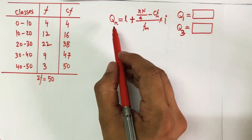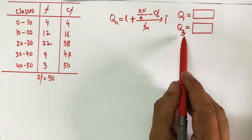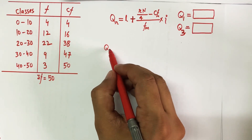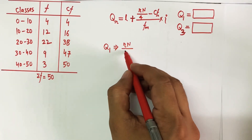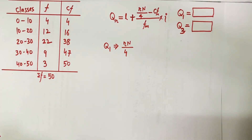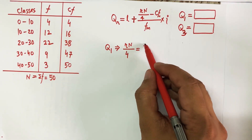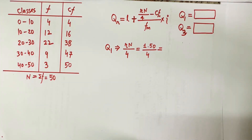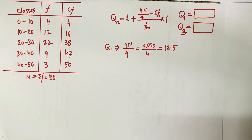Here, r is the number of the quartile being calculated. For Q1 (first quartile), r equals 1; for Q3 (third quartile), r equals 3. For Q1, the first step is always to calculate r×N/4. We divide by 4 because quartiles divide data into 4 equal parts. N is the summation of frequencies, which is 50. So for Q1: r×N/4 = 1×50/4 = 12.5.